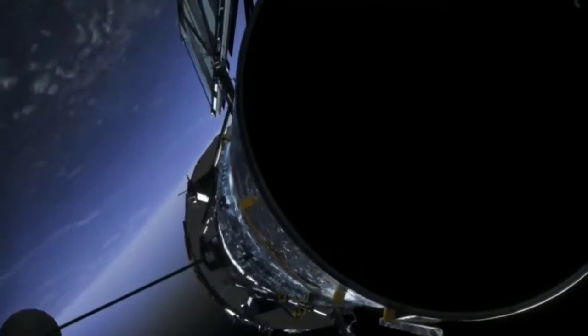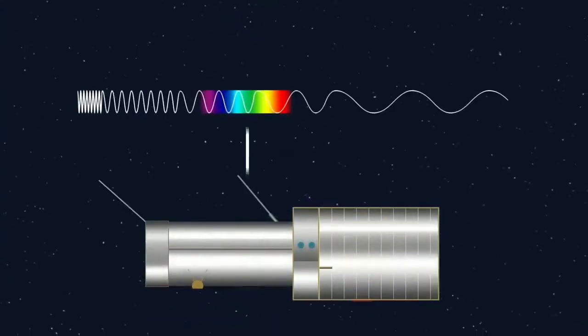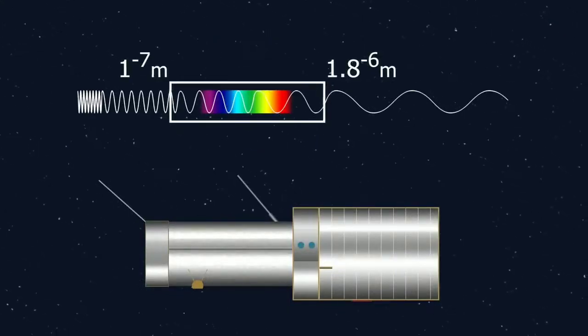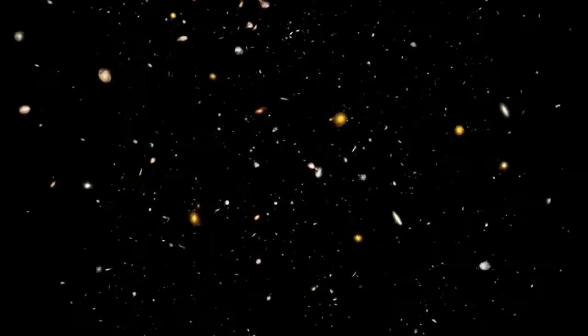Hubble is also limited by the types of wavelengths it can observe. Stars emit a wide range of light, and although Hubble can observe a wide range of wavelengths, it can't observe anything greater than near-infrared. This limits its ability to look back in time to distant objects.